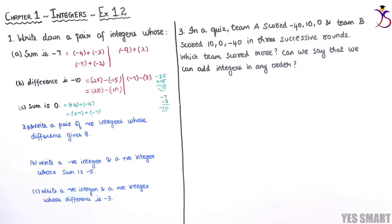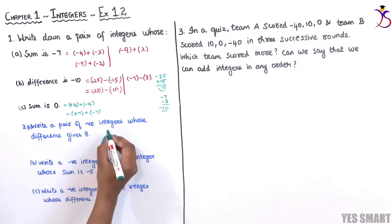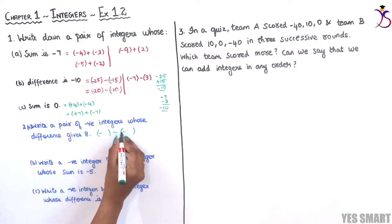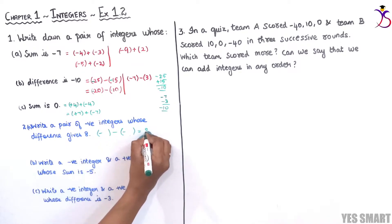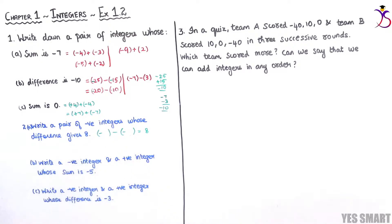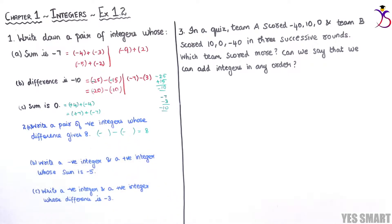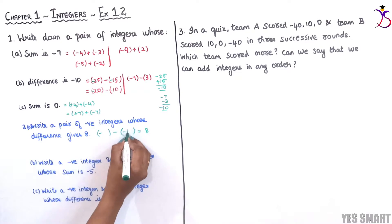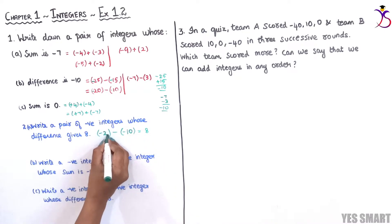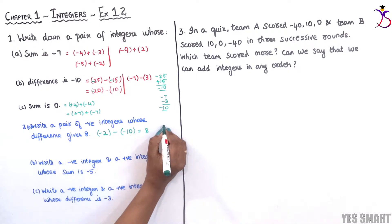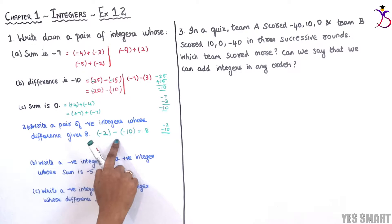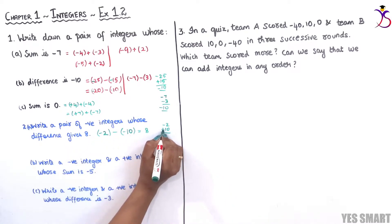Second subdivision: write a pair of negative integers whose difference gives 8. So both integers are negative, and the difference should be 8. Since difference is minus, in between it is also minus. To split 8, we can do it like 10 and 2. So minus 2 minus minus 10: since we have minus, the second term sign changes to plus — minus into plus minus — on subtraction we will have 8, and the greater number sign is plus.